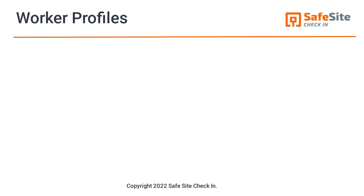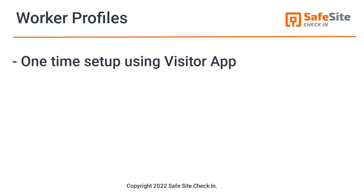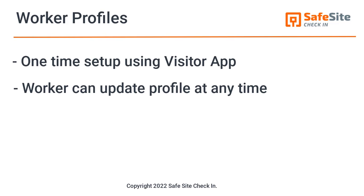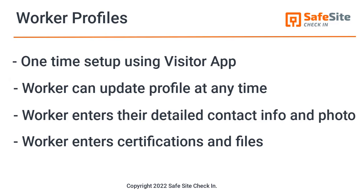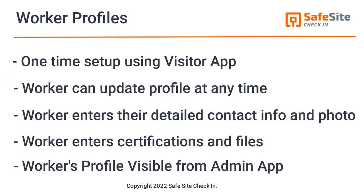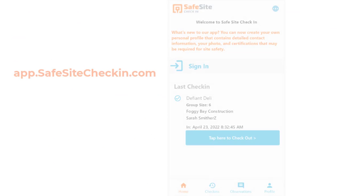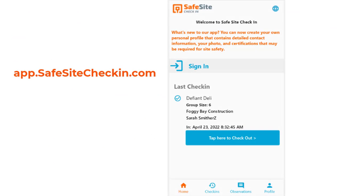This video shows how worker profiles are set up and used as part of the check-in process, where a visitor's profile can be viewed by admins and site supervisors. A person sets up their profile using the Visitor app and can update their profile at any time with new information. Detailed information and a photo are part of the profile, as well as certifications and supporting file attachments. A visitor's profile is visible through the admin app. Now let's take a look at how a profile is set up.